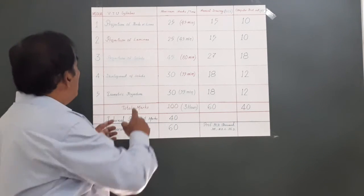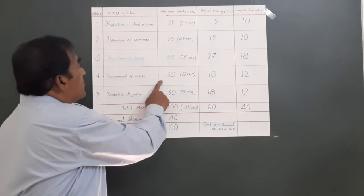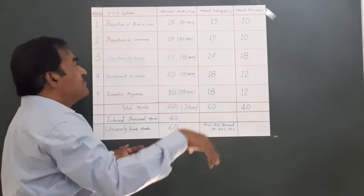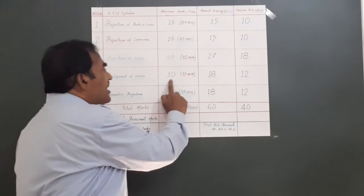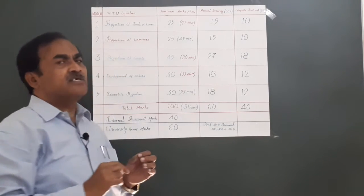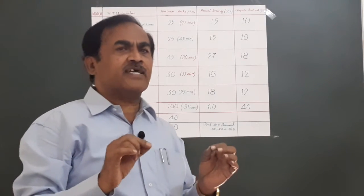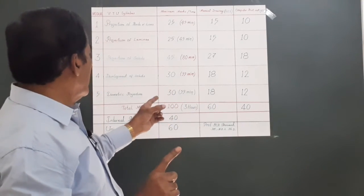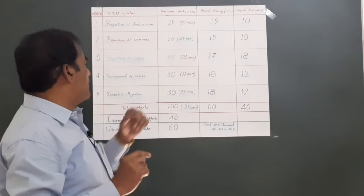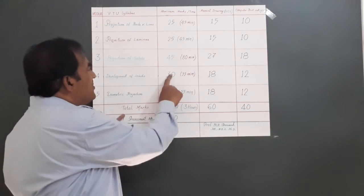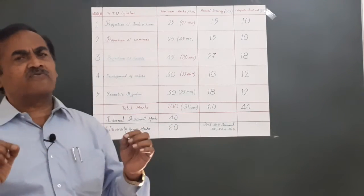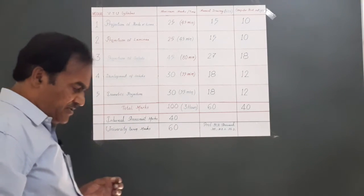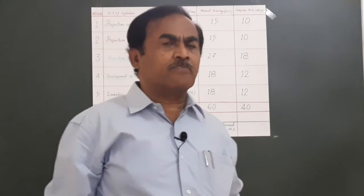Coming to module 4, it carries 30 marks totally. Proportionate to the time available and the marks, I have allocated 55 minutes. My suggestion is to take not more than 55 or one hour maximum to solve a question on development. Similarly, if you are doing isometric, you have to take not more than 50 to 60 minutes to complete.